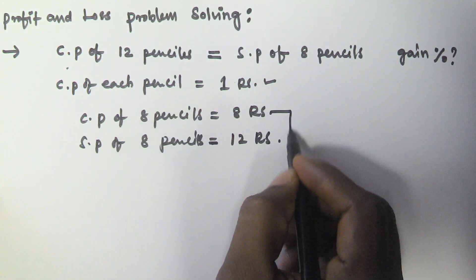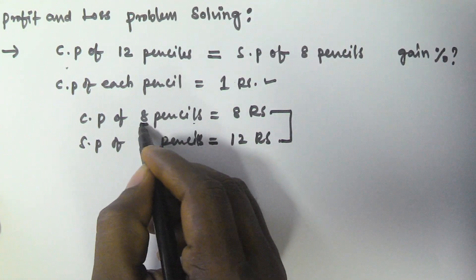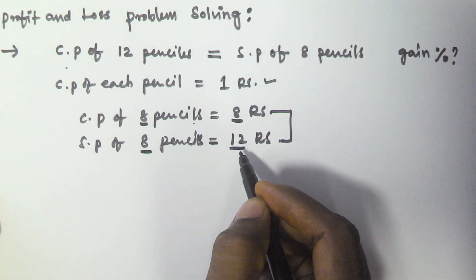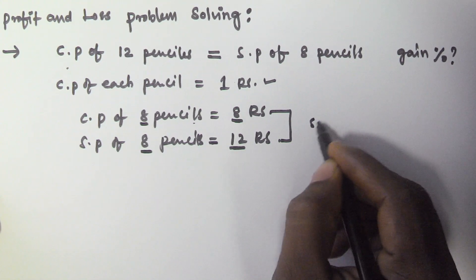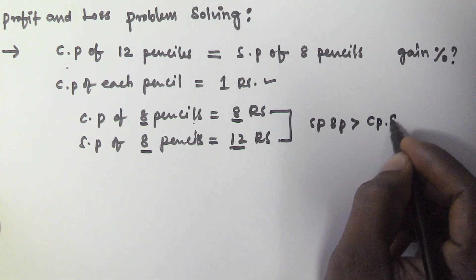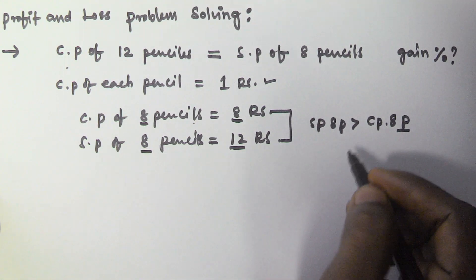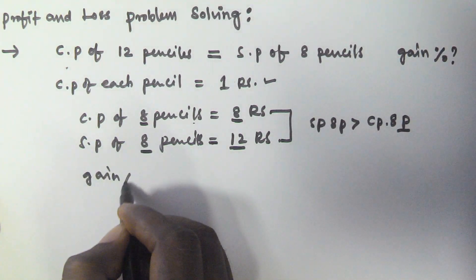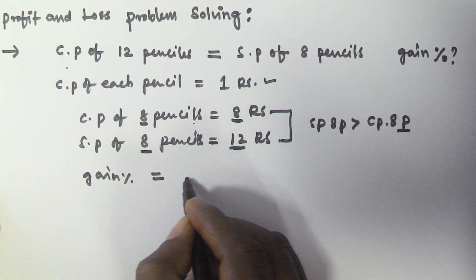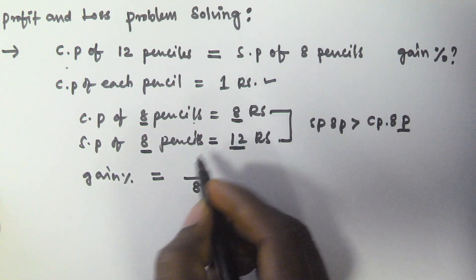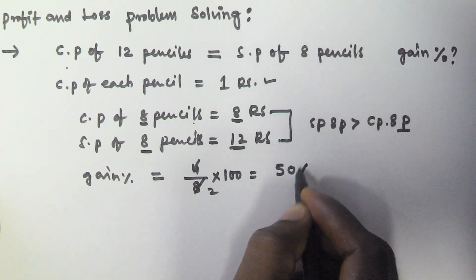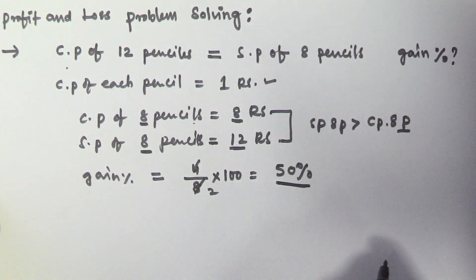So if you observe: he is buying 8 pencils for 8 rupees, but he is selling 8 pencils for 12 rupees. The selling price of 8 pencils is greater than the cost price, so there is a gain. The gain percentage is given by gain divided by cost price into 100. The gain is 12 minus 8 = 4, so 4 by 8 into 100 equals 50% gain.